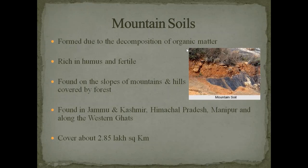Mountain soil is formed due to the decomposition of organic matter. Because of this decomposition, it is rich in humus and fertile. It is found on the slopes of mountains and hills covered by forest — the plant leaves, branches and animals that die there decompose and make the soil fertile. Mountain soils are found in Jammu and Kashmir, Himachal Pradesh, Manipur, and along the Western Ghats. This covers about 2.85 lakh square kilometres.